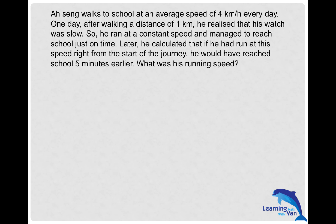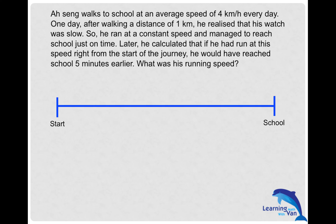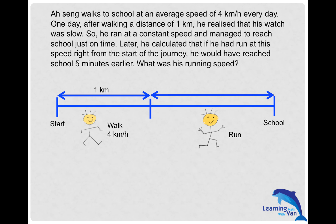Let's draw a typical timeline that you're familiar with — start and end. The destination is school. Input whatever information you have. After walking a distance of one kilometer, he walked at an average speed of four kilometers per hour, and then after that he ran all the way. In this case, it's not necessary to find out what the distance he ran is — I'll show you why.